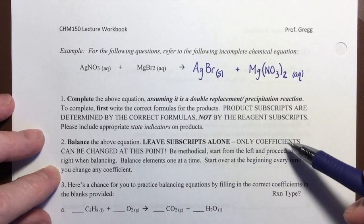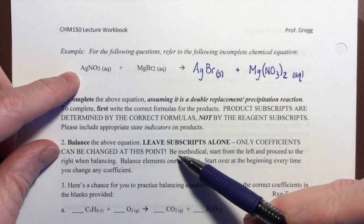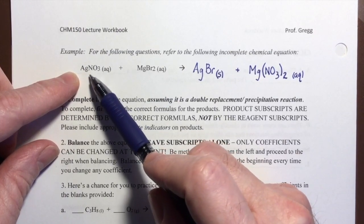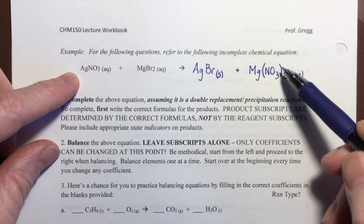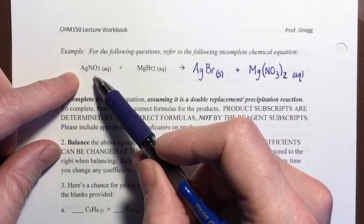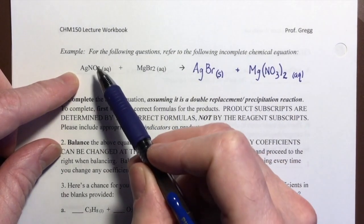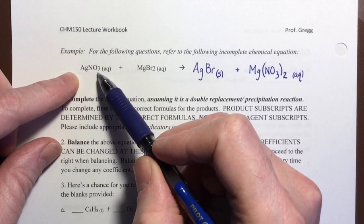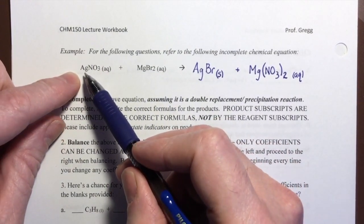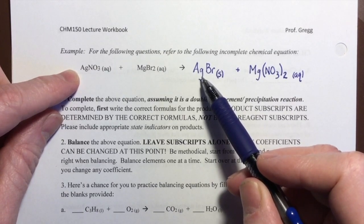So we're going to be methodical. We're going to start from the far left right here with that silver and proceed to the right. We're going to balance elements one at a time. And if we see that a polyatomic ion, like this nitrate, remains the same polyatomic ion on the product side of the equation, then we are going to treat that ion as if it were one species. We're not going to try to balance the nitrogens and then balance the oxygens. We're going to treat that nitrate as a single species and see how many of those we have. So here we go. We're starting from the far left. We're starting with the silver. One silver on the reagent side, one silver on the product side. The silvers are balanced, for now anyway.